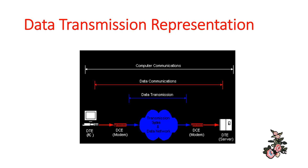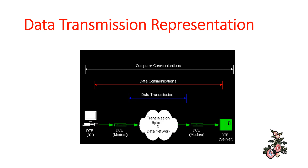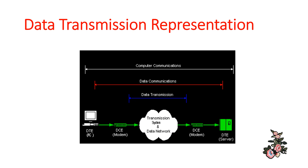The blue line indicates data transmission, the red line indicates data communications, and the white line indicates computer communications. Here is a representation of a reliable transmission diagram.